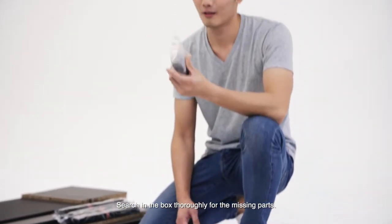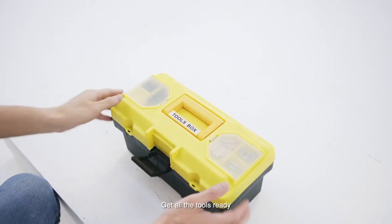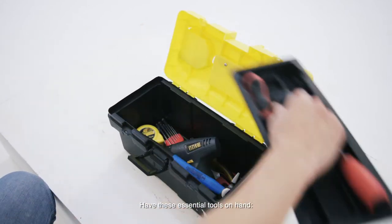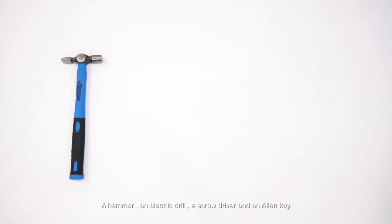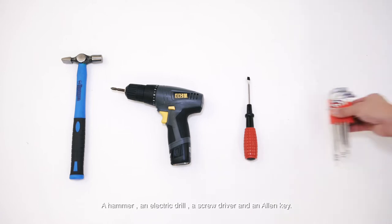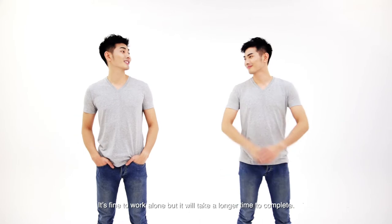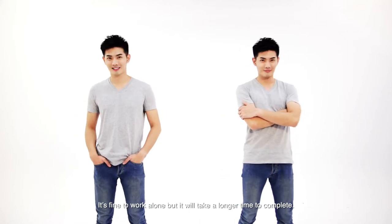Search in the box thoroughly for missing parts. Get all the tools ready. Have these essential tools on hand: a hammer, an electric drill, a screwdriver, and an Allen key. Also, if possible, get a helper. It's fine to work alone but it will take a longer time to complete.